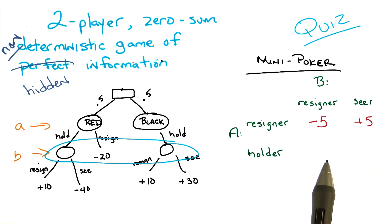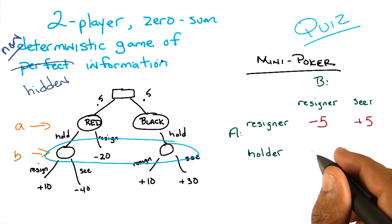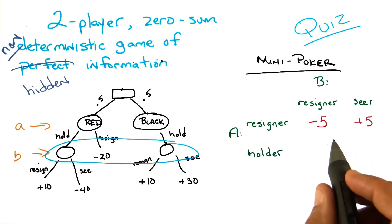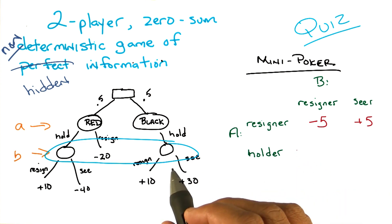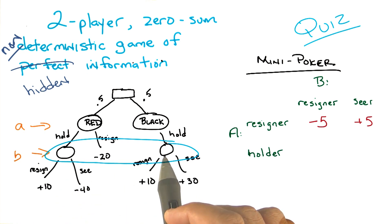Thanks. Okay, which one next? So holder resigner. So holder resigner, that means when A gets a card, A is going to hold the card. And that's true red or black. Yep. And then it's going to be B's turn, and B is going to, oh, we're doing holder resigner, so it's going to resign.